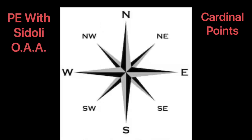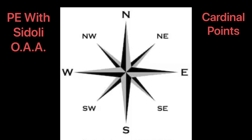These are the cardinal points: north, east, south, and west. However, now you're in year five, we've added northeast, southeast, southwest, and northwest. You'll need to use these to give directions.